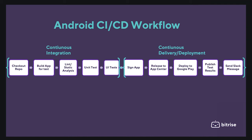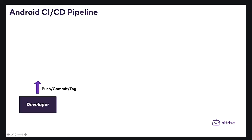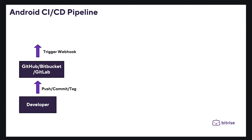After that, we can send the test results to the team and send a Slack notification with the build status. To implement the previous design with Bitrise, you can connect your source code and then add all the required steps to build, test, and deploy your app to your testers or to different app stores such as the Google Play Store and Huawei AppGallery. This is an example of the Android CI/CD pipeline.